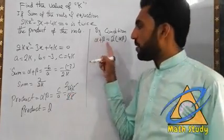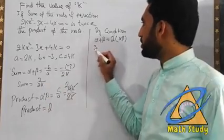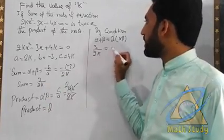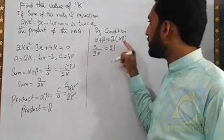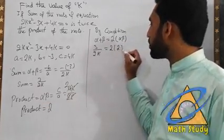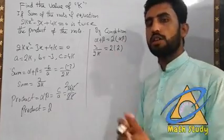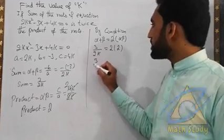Now we have α + β value which is 3/2k, and we have α × β value. I have found these two values. Next step.